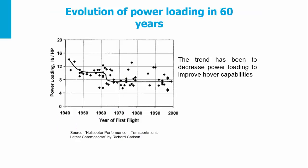The evolution of power loading over 60 years shows the following trend. The trend has been to decrease the power loading to improve hover capabilities. There is a big change in the 1950s in power loading, which comes with the introduction of the turboshaft engine.